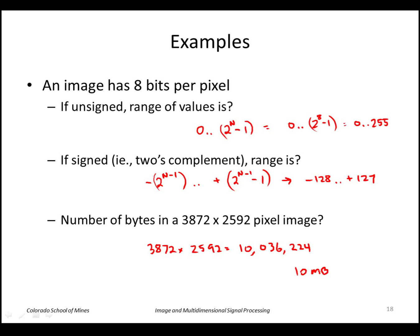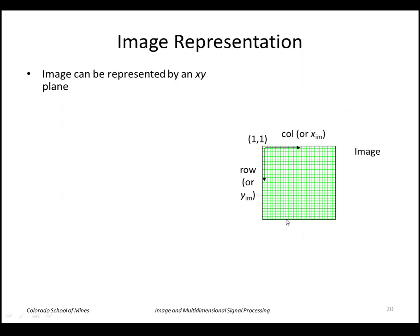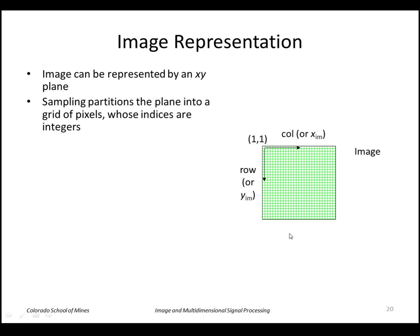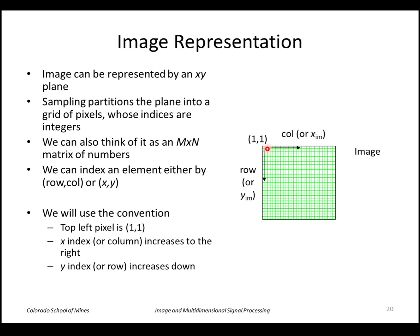The number of bytes in an image of a given size is found by multiplying those values together — for example, about 10 megabytes. Going from an analog image on the image plane to discrete values inside the computer: our convention is that the image is placed into a two-dimensional buffer array of pixels, where the indices are integers — essentially a matrix of numbers m by n. Elements can be indexed by row and column, or by x and y, where we start at (1,1) as MATLAB does, with x increasing to the right and y increasing downward.